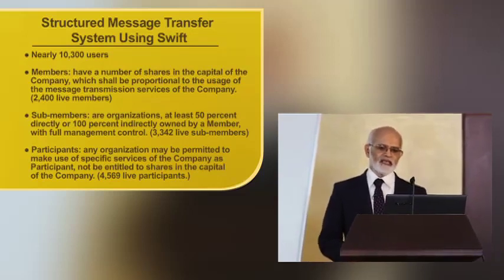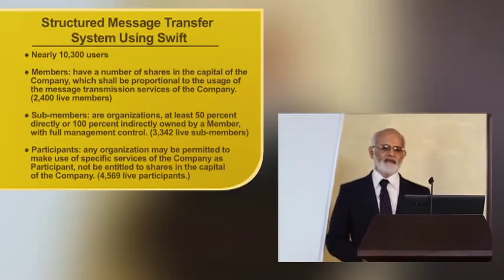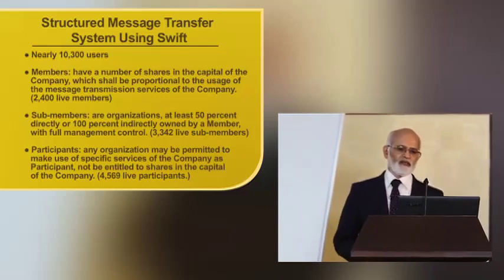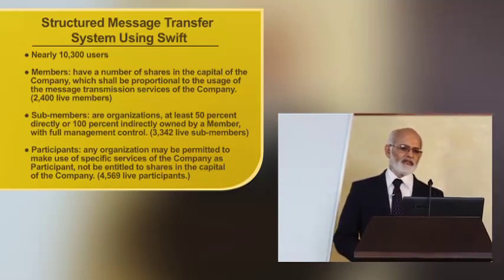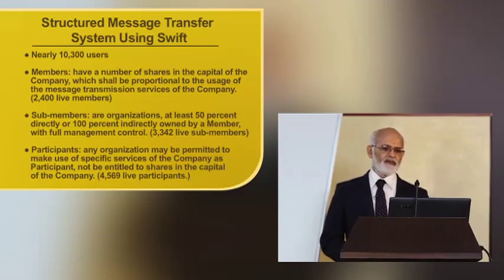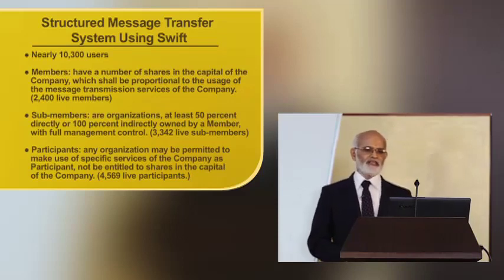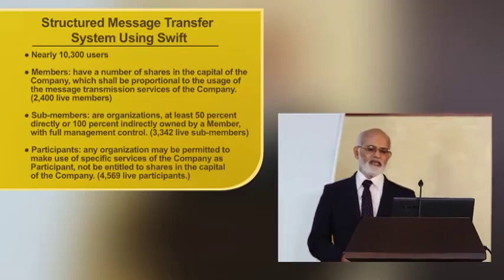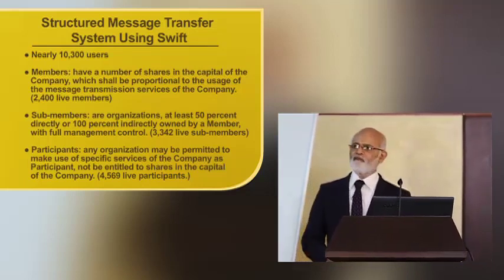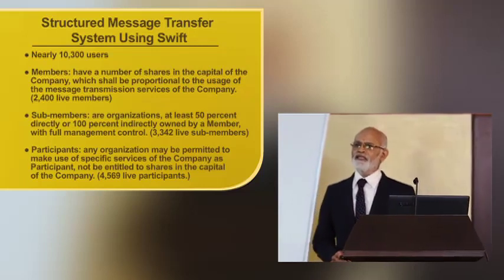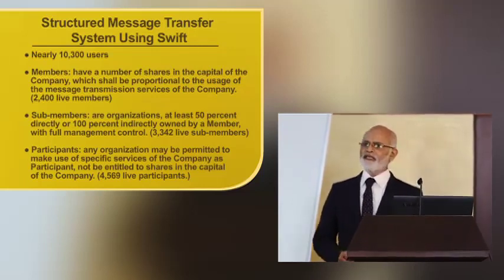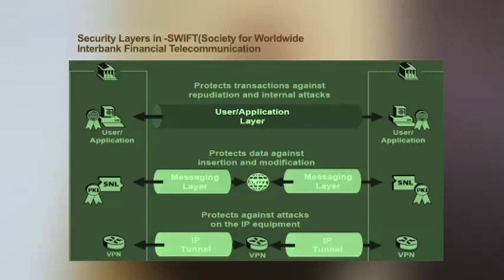Some members or organisations have at least 50% of their shares directly or indirectly, and 100% directly owned by the members. There are about 3,342 live members and sub-members. Any organisation may be permitted to make use of specific services of the company as a participant but is not entitled to share in the capital of the company. The SWIFT messaging system is pictorially depicted with a message layer, user application layer, and VPN terminal protecting against attacks.